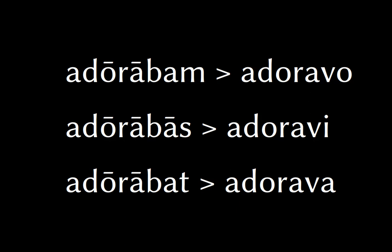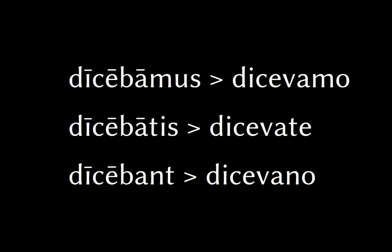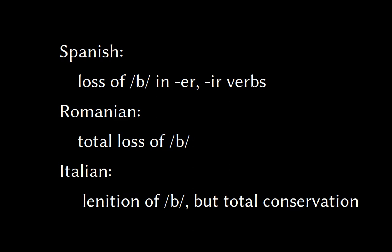Italian is the other leg of the tripod in that you don't lose anything. In Italian, B's become V and everything is retained. So you retain the meter and you don't actually lose anything in any verb class. To generalize: in Spanish and other Iberian Romance languages you have partial loss of the B; in Romanian, total loss; in Italian, you change it to a V but it's totally conserved.